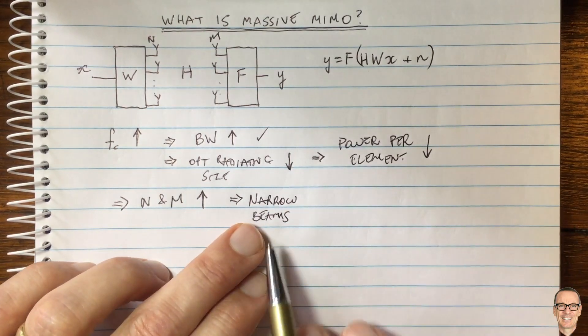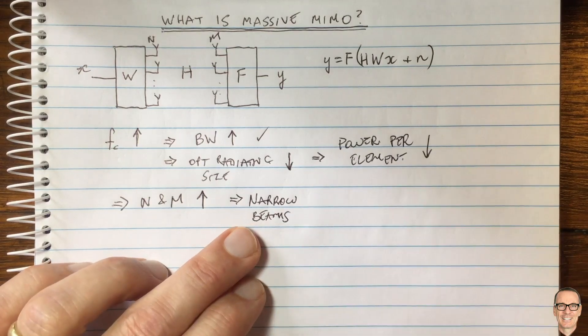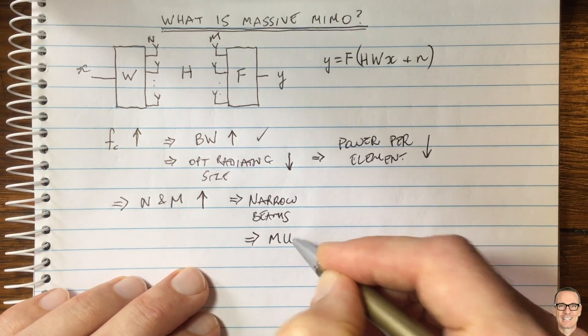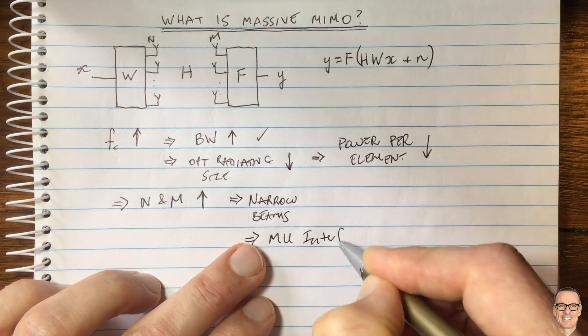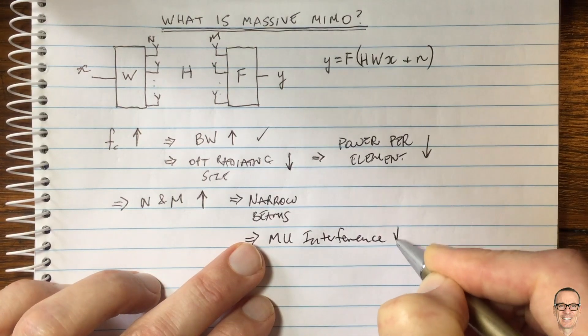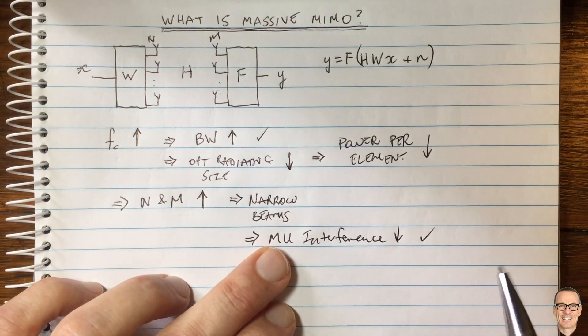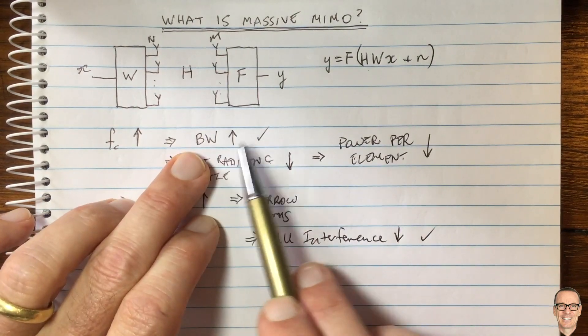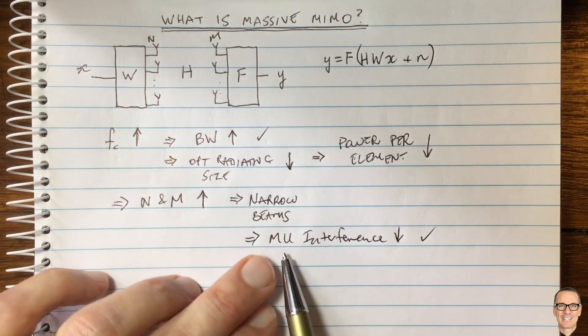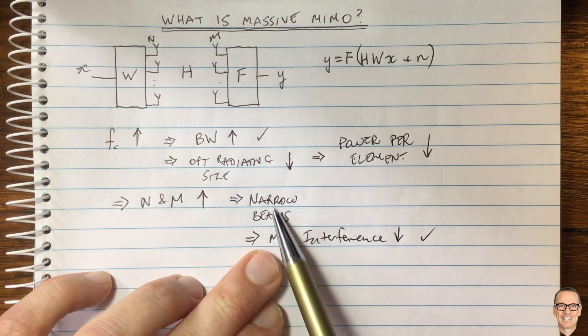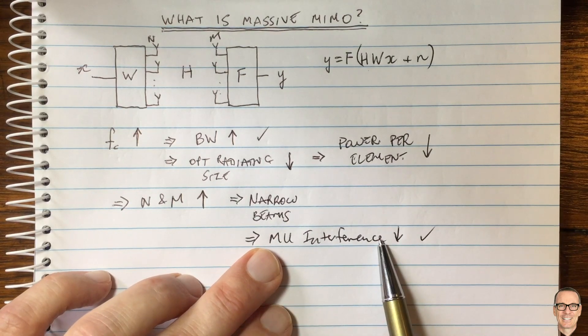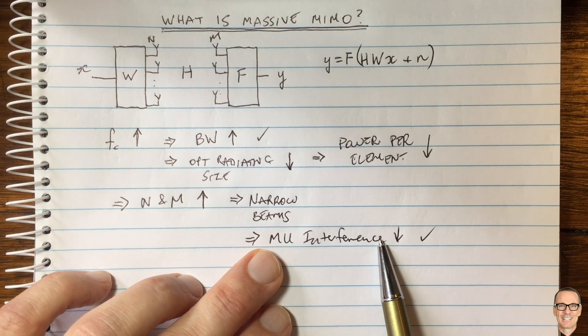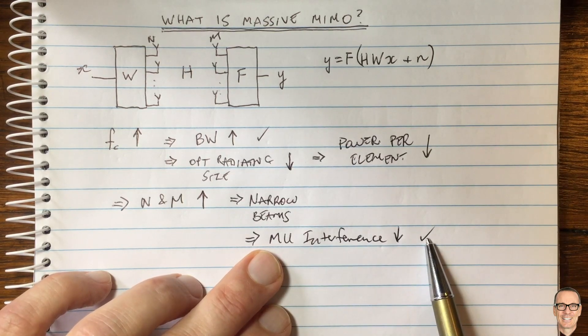Narrow beams imply that you're going to have a good property: the multi-user interference is going to come down. This is another good property of having the higher frequency and massive MIMO. You get more bandwidth, which is really desirable, and because you've got massive antenna elements with narrow beams, you have less multi-user interference. The beams don't overlap with each other between different users because they're so narrow.